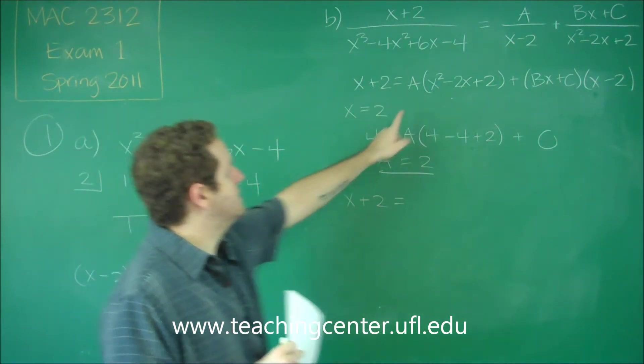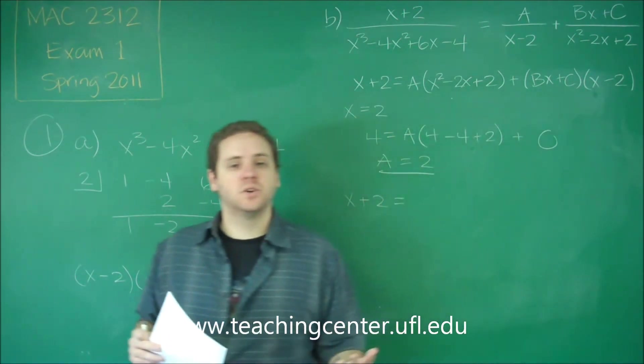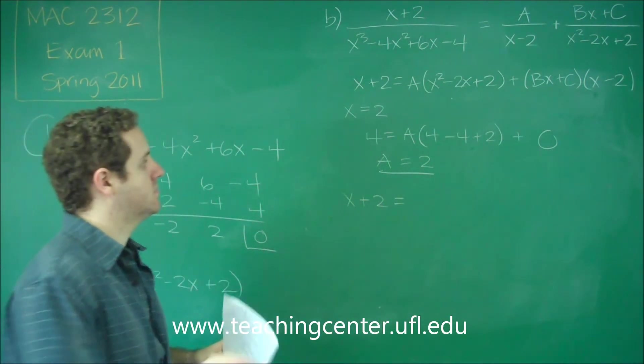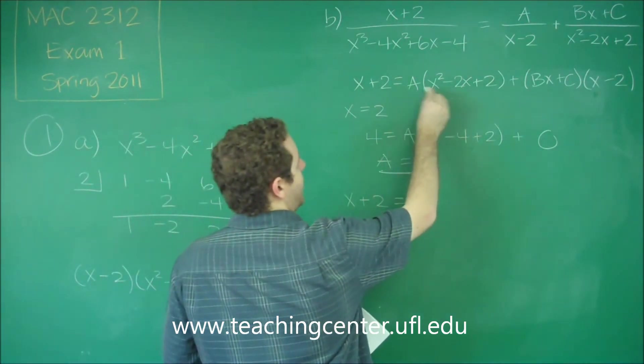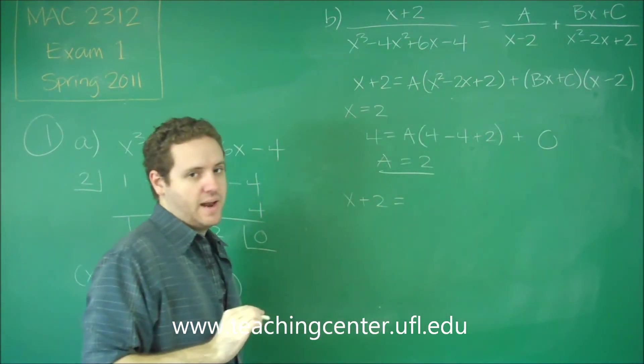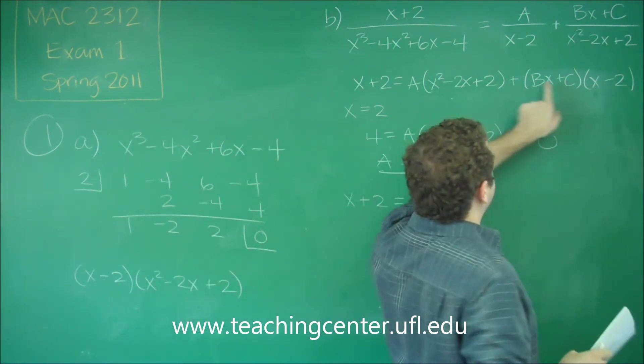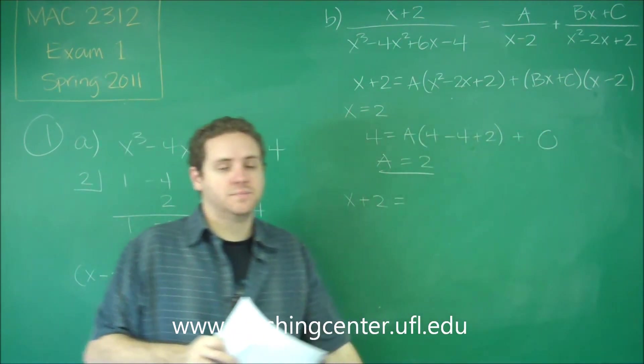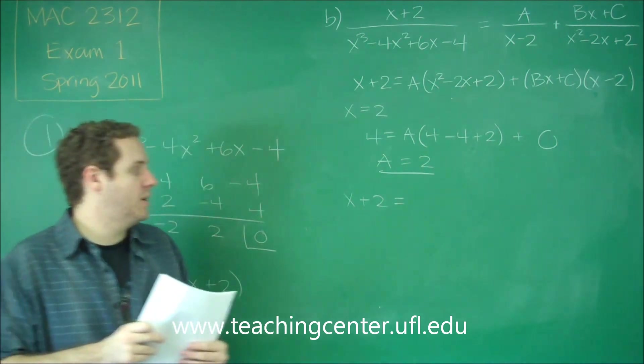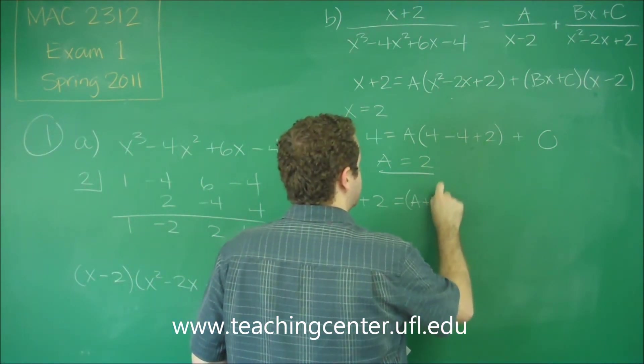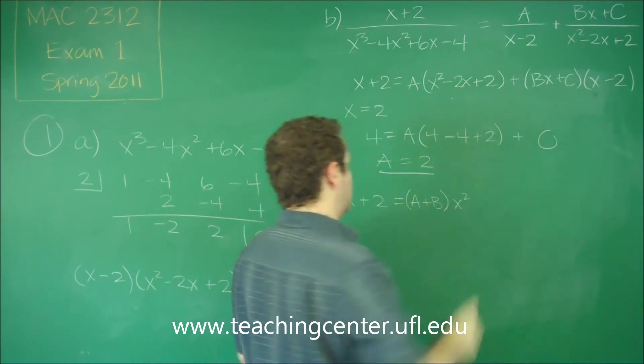So first let's go through this and see what x squared terms would come out of this if we expanded it. So you can see we'd have an Ax squared if we distributed that A. And in this term here, if we foiled all this out, we would have Bx squared. So we have an Ax squared and a Bx squared. So in other words, we have an A plus B coefficient on x squared.